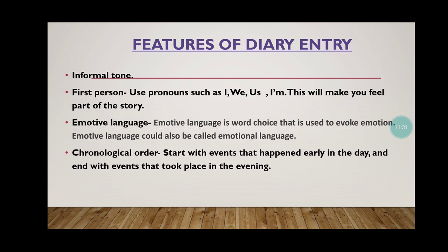Chronological order — you have to start with events that happened early in the day and end with events that took place in the evening. Start from the morning and mention all events, then what happened in the afternoon, then in the evening, and finally at night.